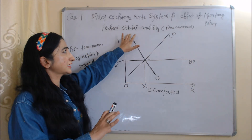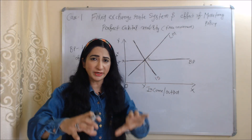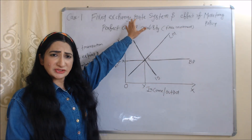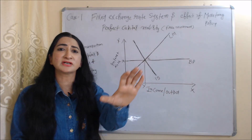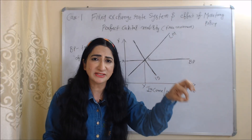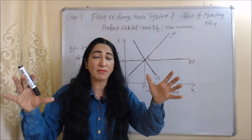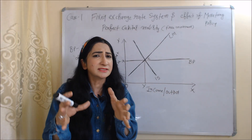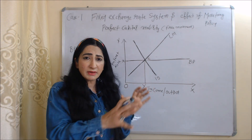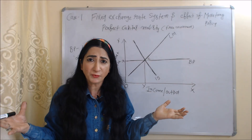Here we assume perfect capital mobility, which means free movement of capital from one country to another. The fixed exchange rate is decided by the central bank or government — meaning exchange rate is not decided by market forces. Now, with the help of this diagram, we will see the effect of monetary policy when our exchange rate is fixed.